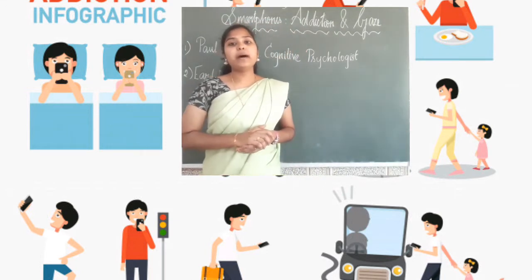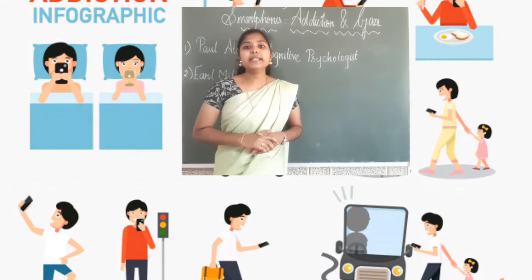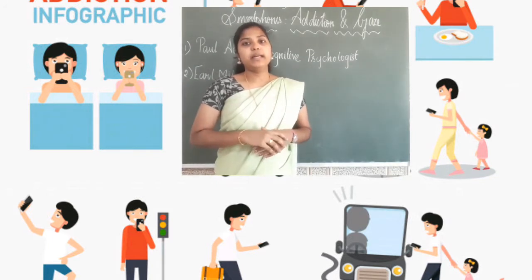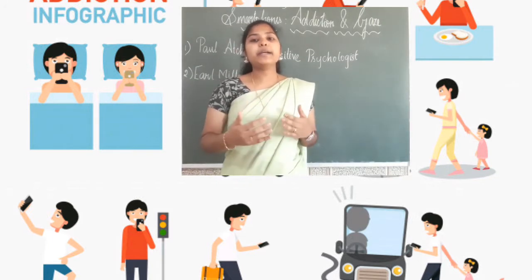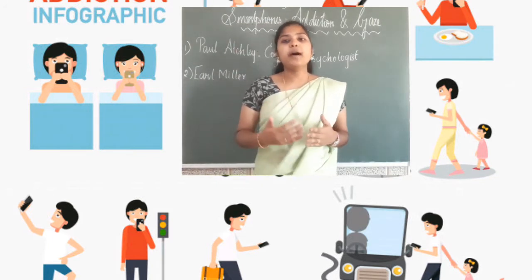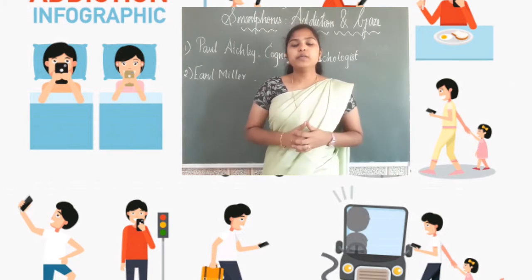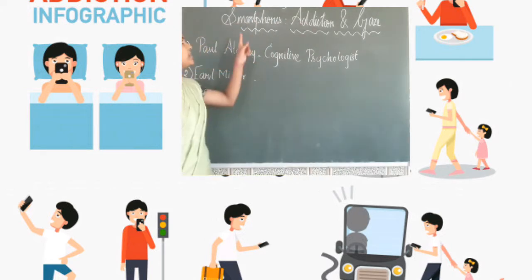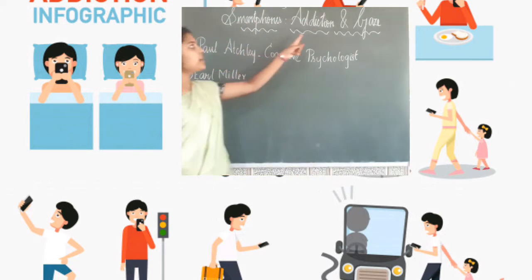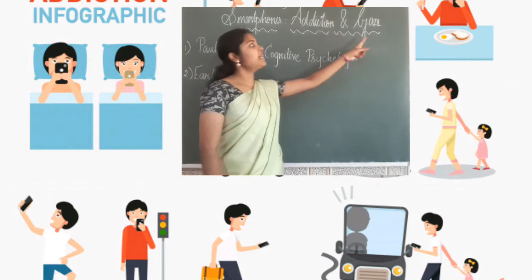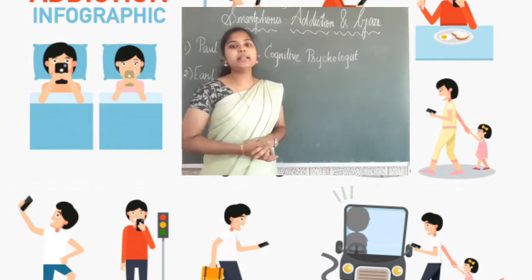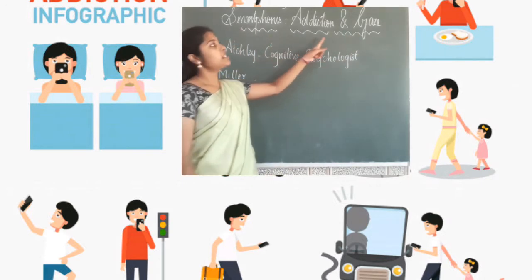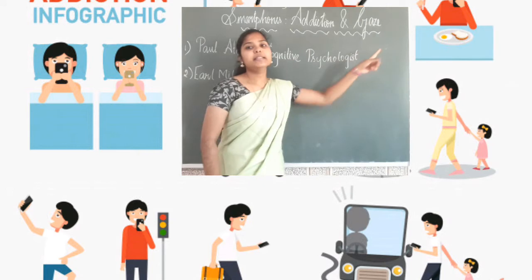We learned about the negative impacts of smartphones — negative impacts of smartphone usage. What is the title of the lesson? Smartphones, Addiction and Gaze.